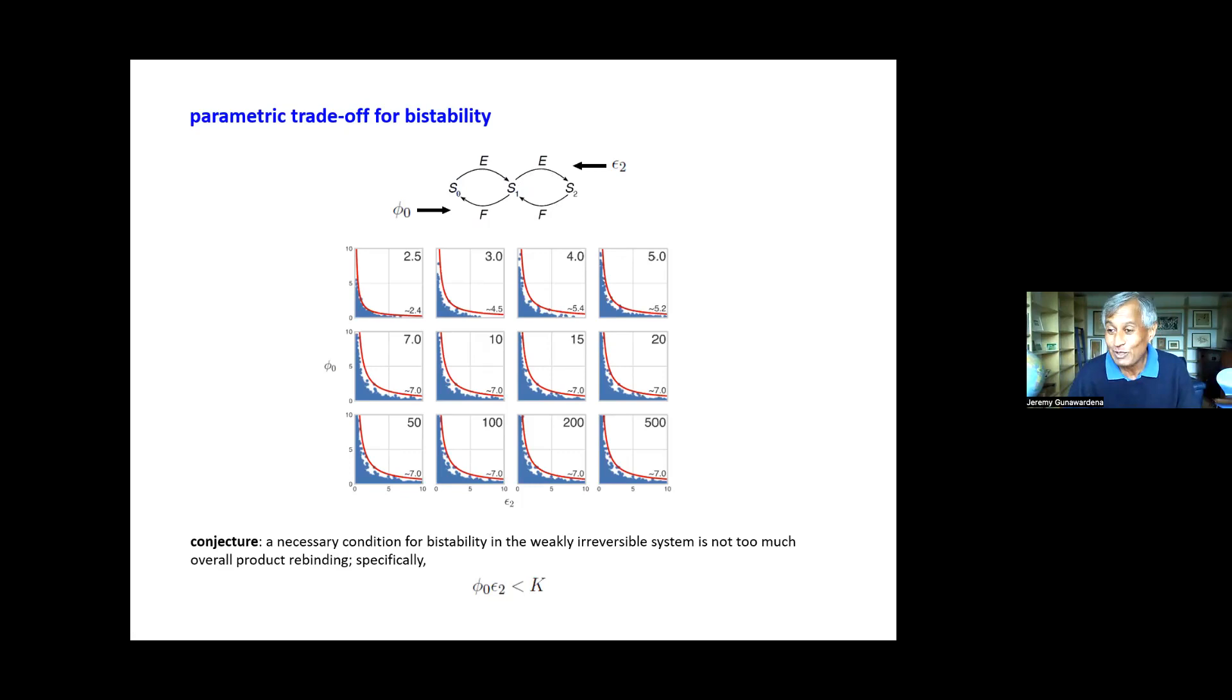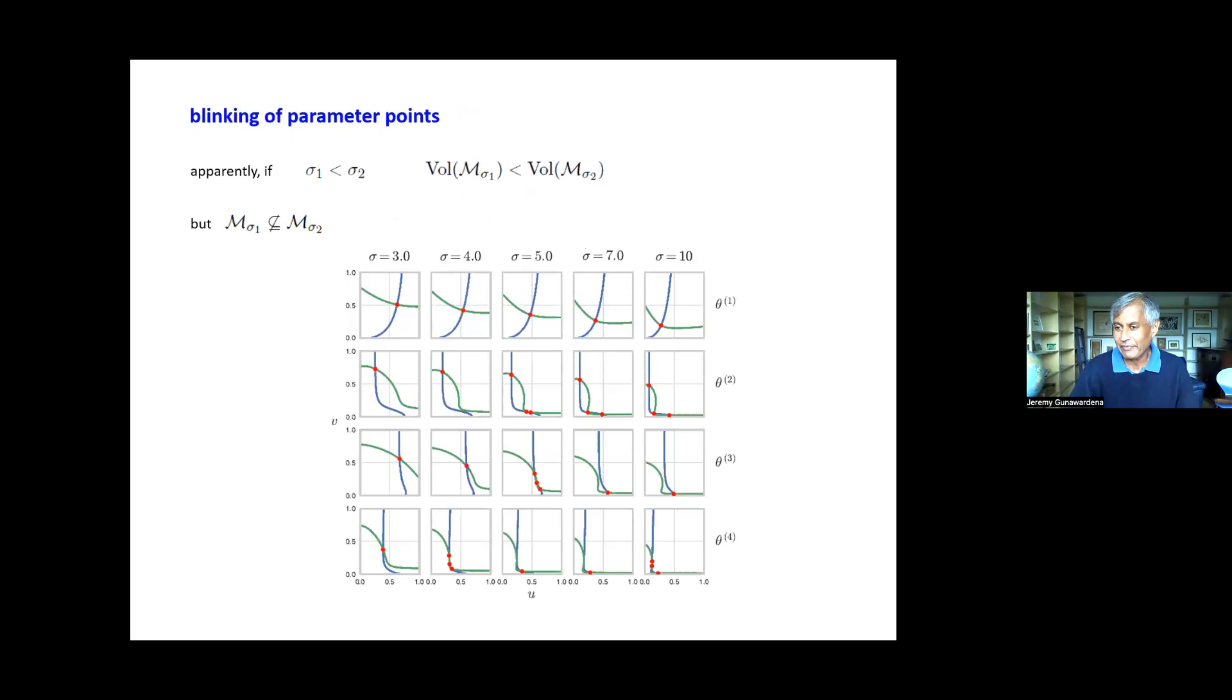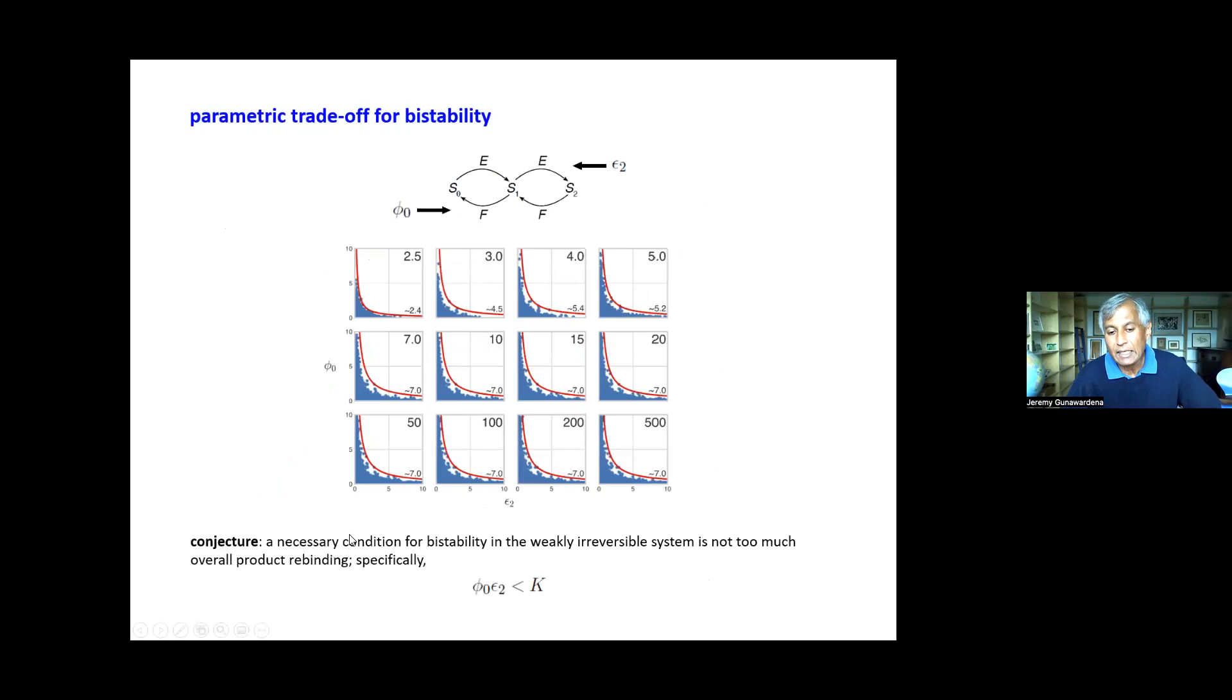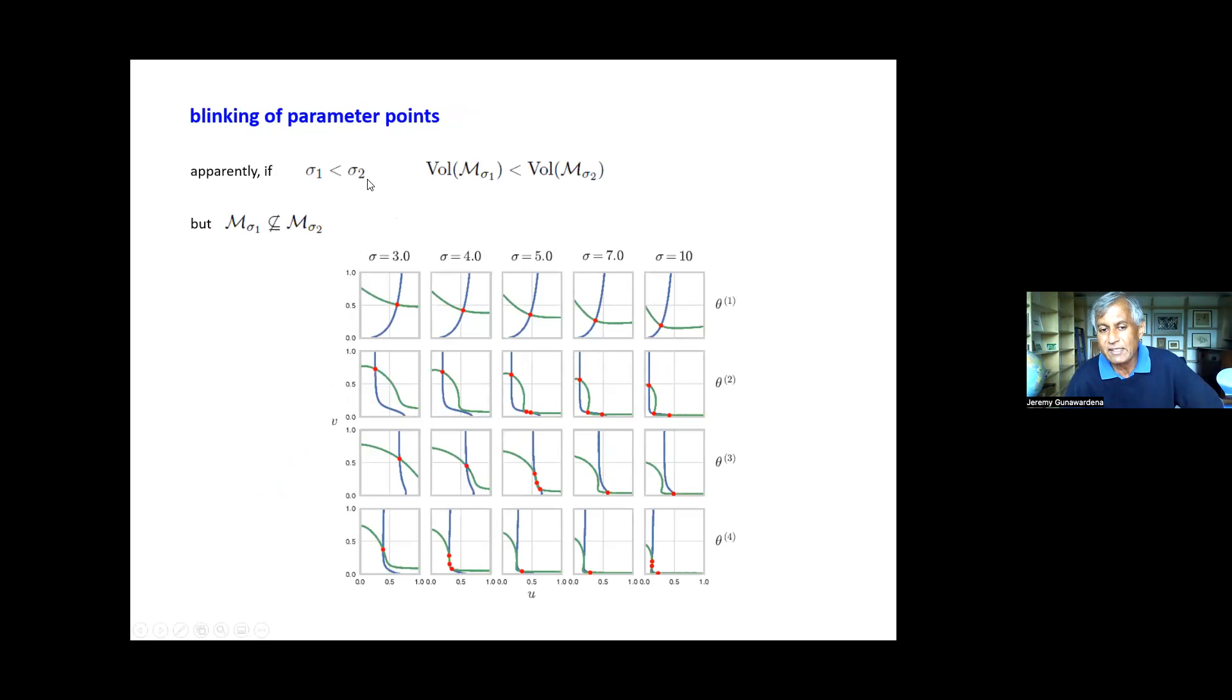But the thing I really want to talk about is this apparent monotonicity. What we showed is this monotonic increase of the volume ratio with σ. It appears that if σ₁ is less than σ₂, the volume of the bistable region is less than the volume of the multi-stable. So the simplest way to explain that is if these regions are just increasing in size, right? That would immediately imply a monotonic increase in the volume. To our amazement - this was just not what we were expecting - this is absolutely not true. The region does not increase as σ increases.